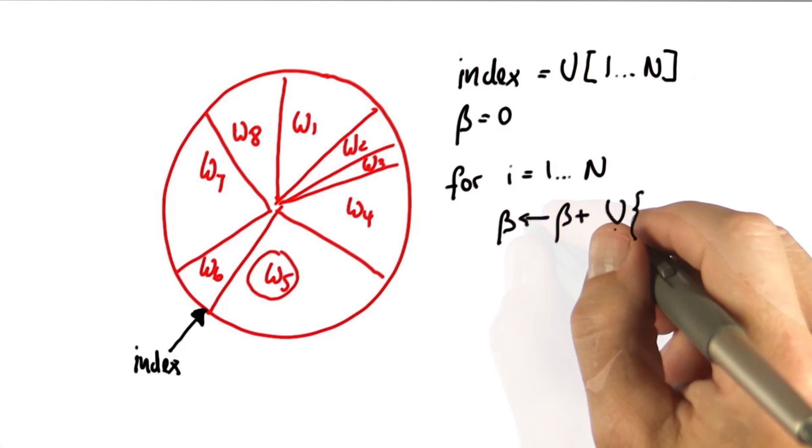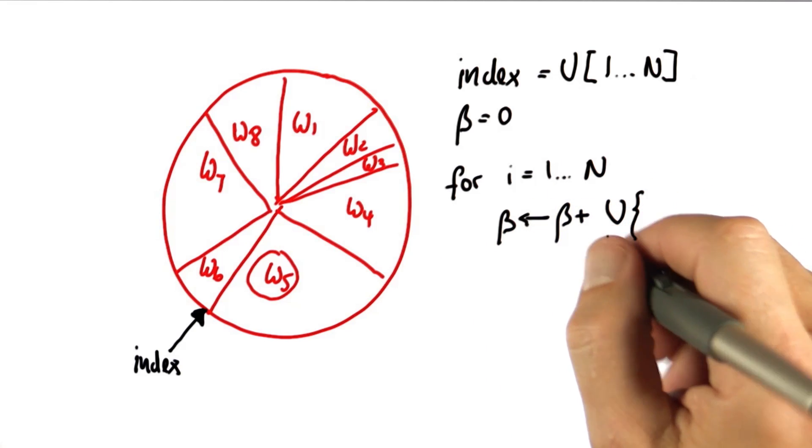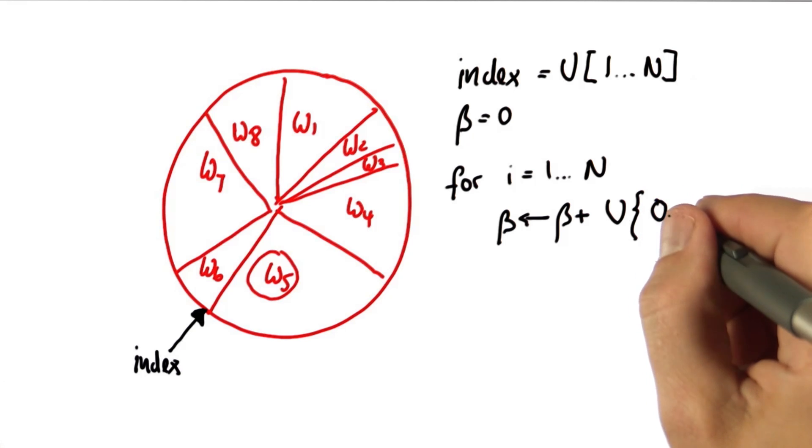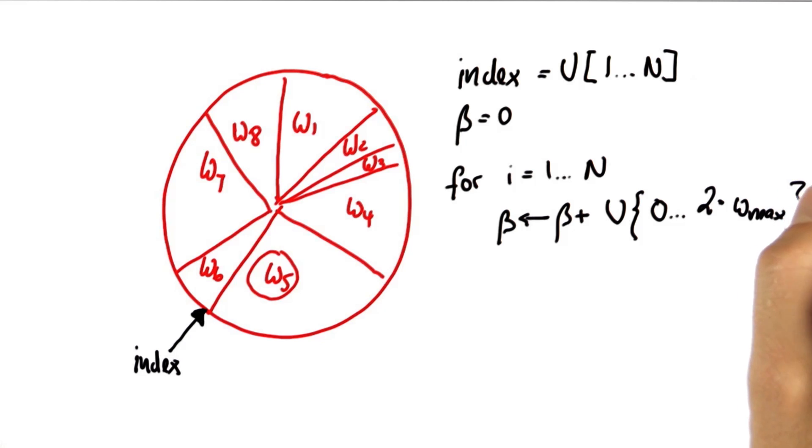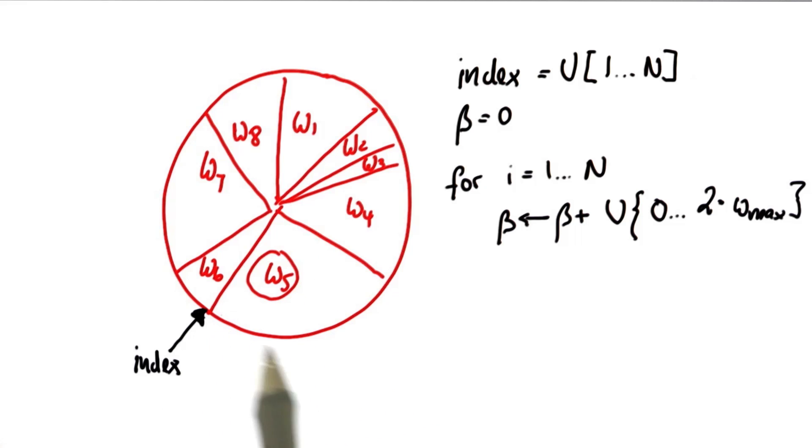...when I construct these particles, a uniformly drawn continuous value that sits between 0 and 2 times W_max, which is the largest of the importance weights in the importance set. W5 is the largest, so we're going to add a random value that might be as large as twice W5.